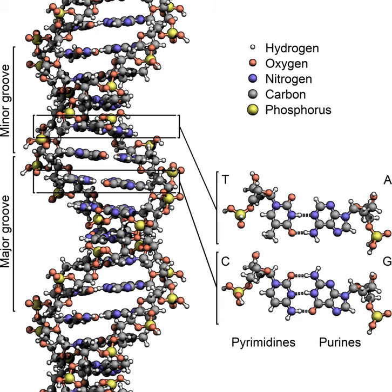DNA is a long polymer of simple units called nucleotides, which are held together by a backbone made of sugars and phosphate groups. This backbone carries four types of molecules called bases, and it is the sequence of these four bases that encodes information. The major function of DNA is to encode the sequence of amino acid residues in proteins using the genetic code. To read the genetic code, cells make a copy of a stretch of DNA in the nucleic acid RNA.